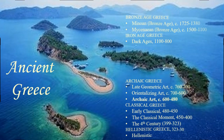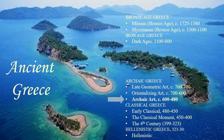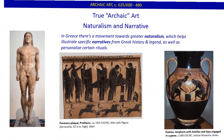In last week's class we moved on specifically to archaic art, which dates to about 600 BC to 490 or 480 BC. I called this true archaic art because for historians the archaic period is the entire period before classical art that begins after the Dark Ages, whereas for art historians archaic is the period that follows geometric and orientalizing periods. We discussed the idea that during this period there is a movement towards greater naturalism, which helps illustrate specific narratives from Greek history and legend as well as personalize certain rituals.